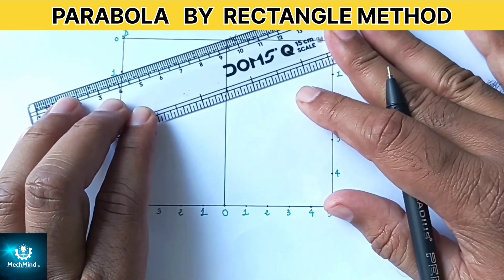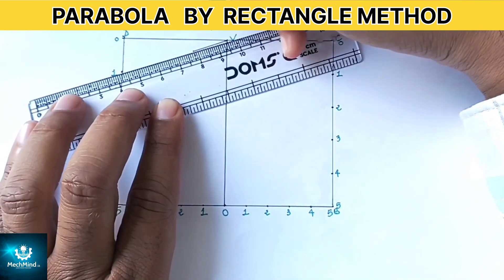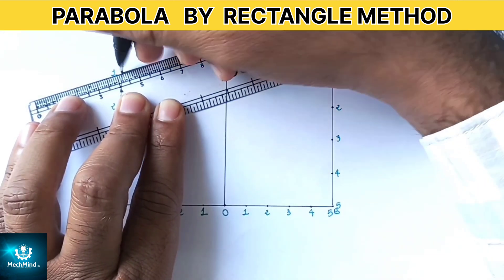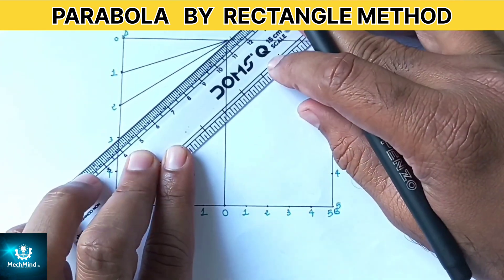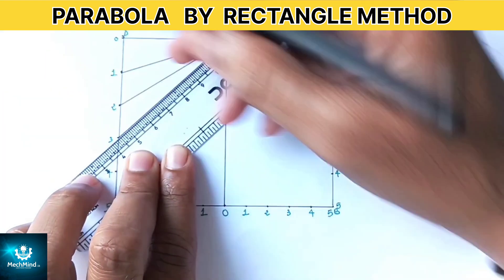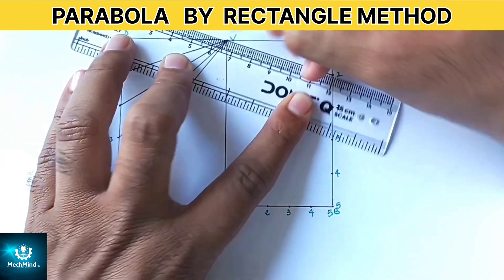Now draw a straight line connecting point V vertex and point 1. Similarly draw another straight line connecting point V and point 2, and draw a straight line on the right hand side.